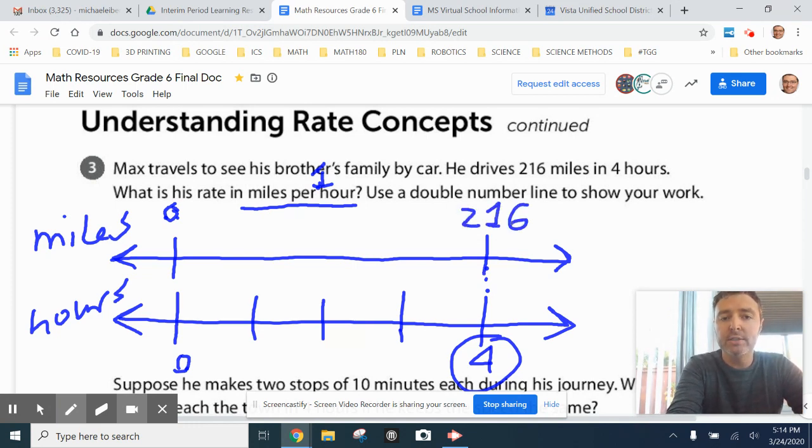And again, the question is: what is his rate in miles per hour, per one hour? So if we were to label these number lines below where the hour number line, it would be labeled one, two, three, four.